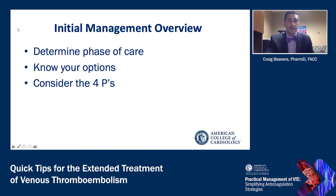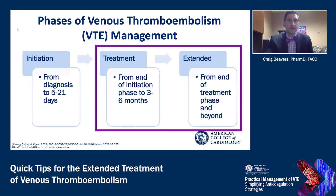As we discussed in the previous quick tip on initial management, you want to determine the phase of care, know your options, and consider the four P's. In this phase of venous thromboembolism management, we're talking about the treatment to the extended phase — from the end of the initiation phase after 21 days to the first three to six months, and then after six months, determining if patients need treatment beyond that period.